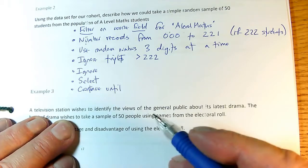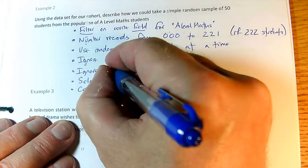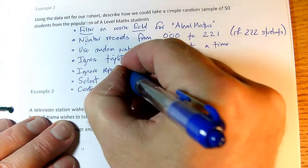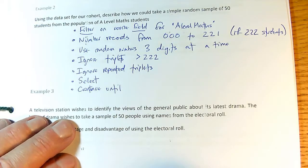What else do we ignore? Well, if we've already got a student chosen, we need to ignore repeats, ignore repeated triplets. So we don't want to select any student more than once.